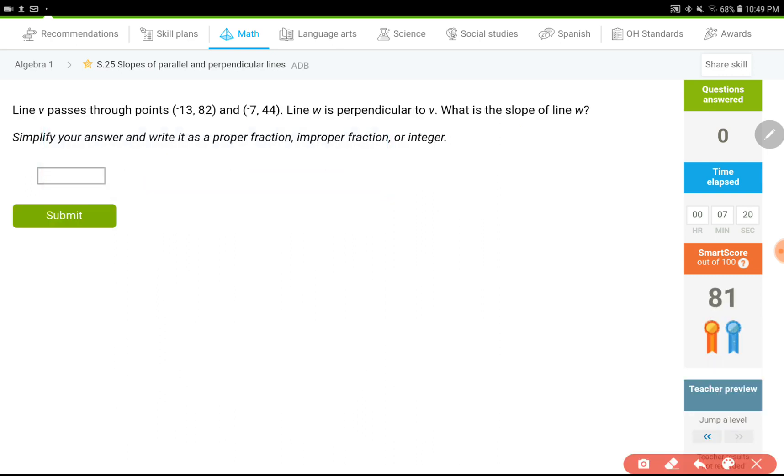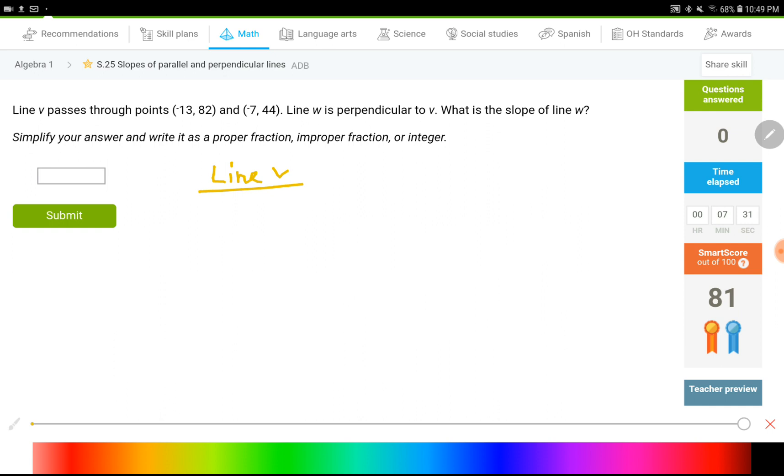Line V passes through these two points, W is perpendicular. It's pretty much the same. Let's get to it. We have two lines. The first one is line V. What we know about this is it has two points: X1, Y1, X2, and Y2. So let's do Y2 minus Y1 over X2 minus X1.